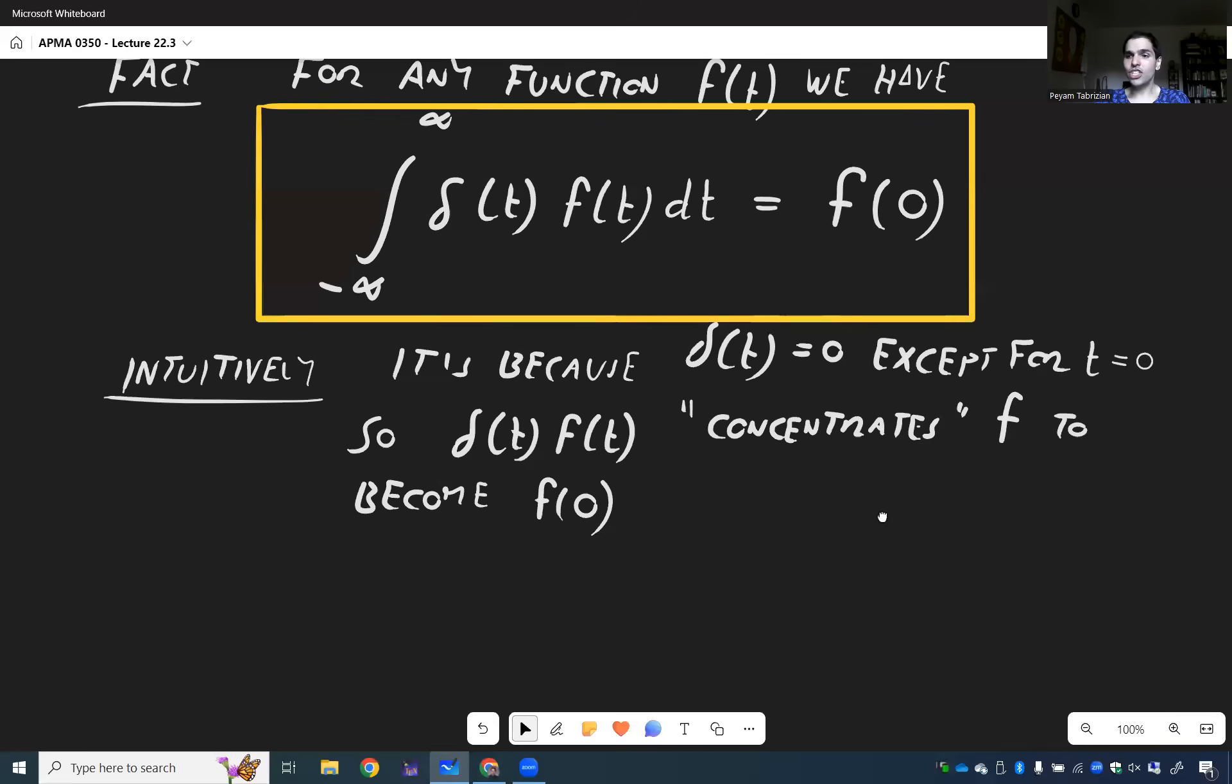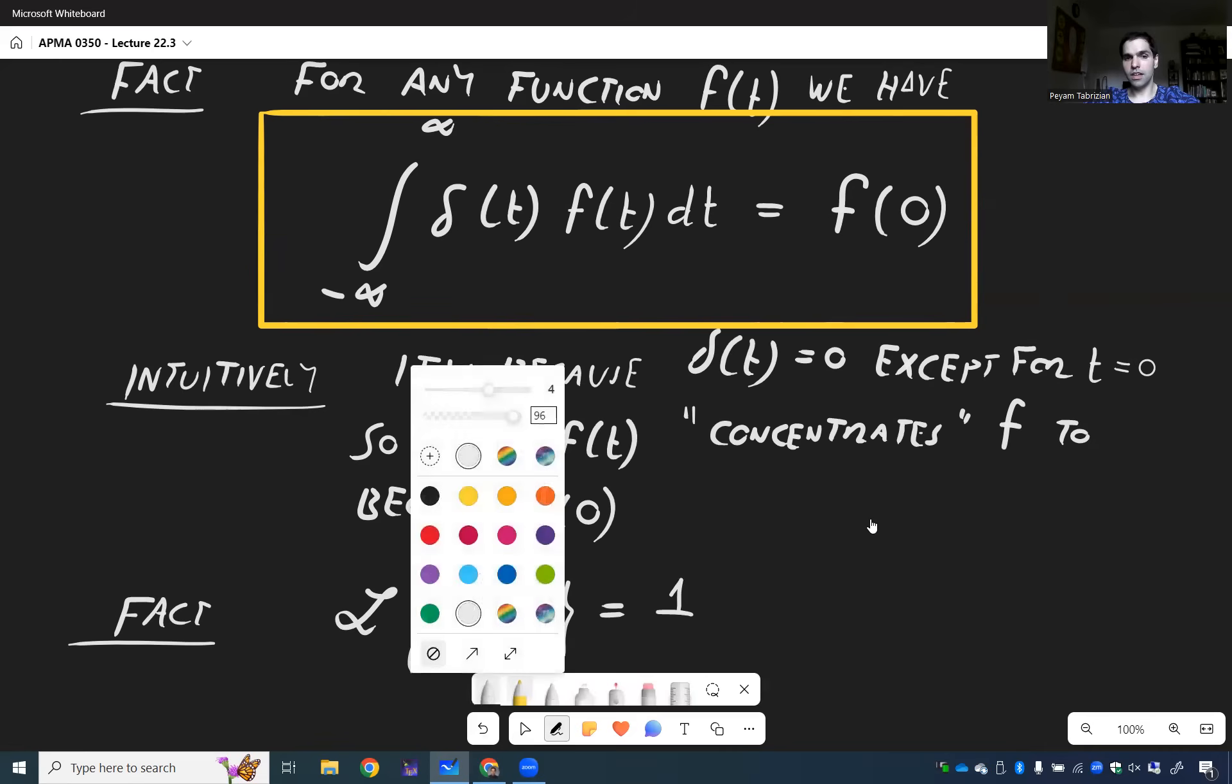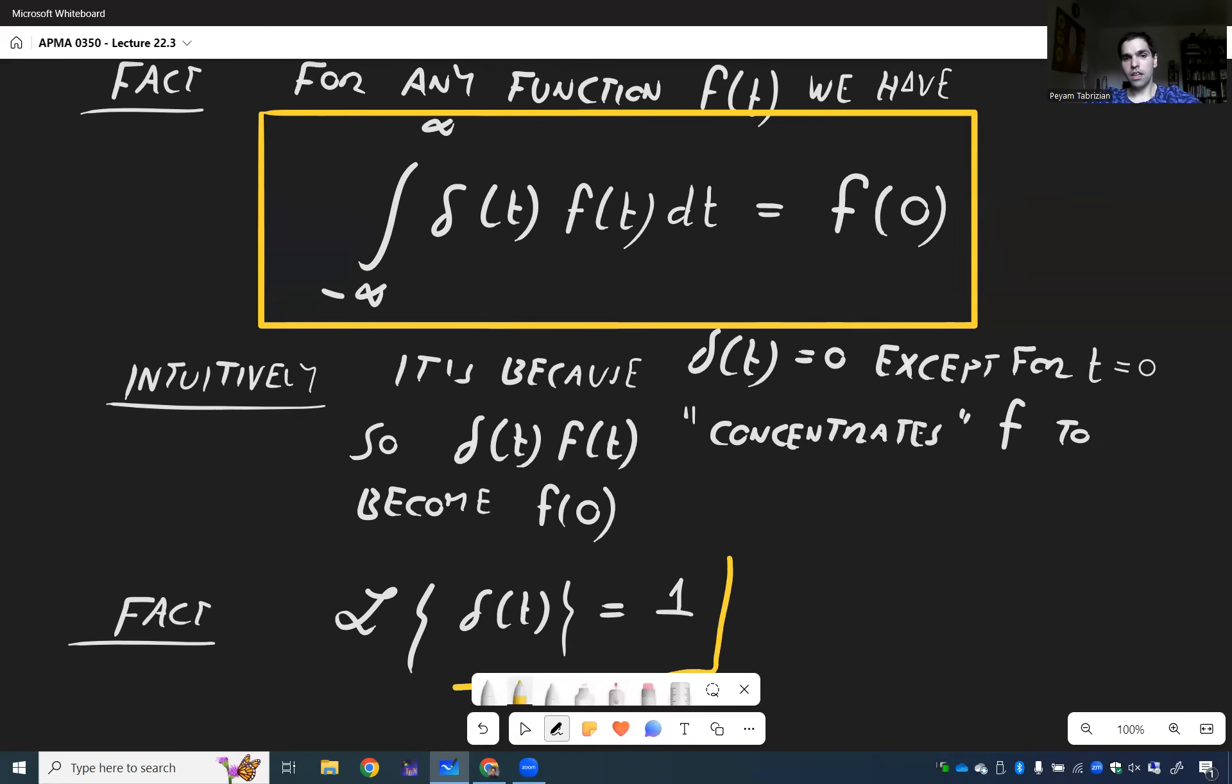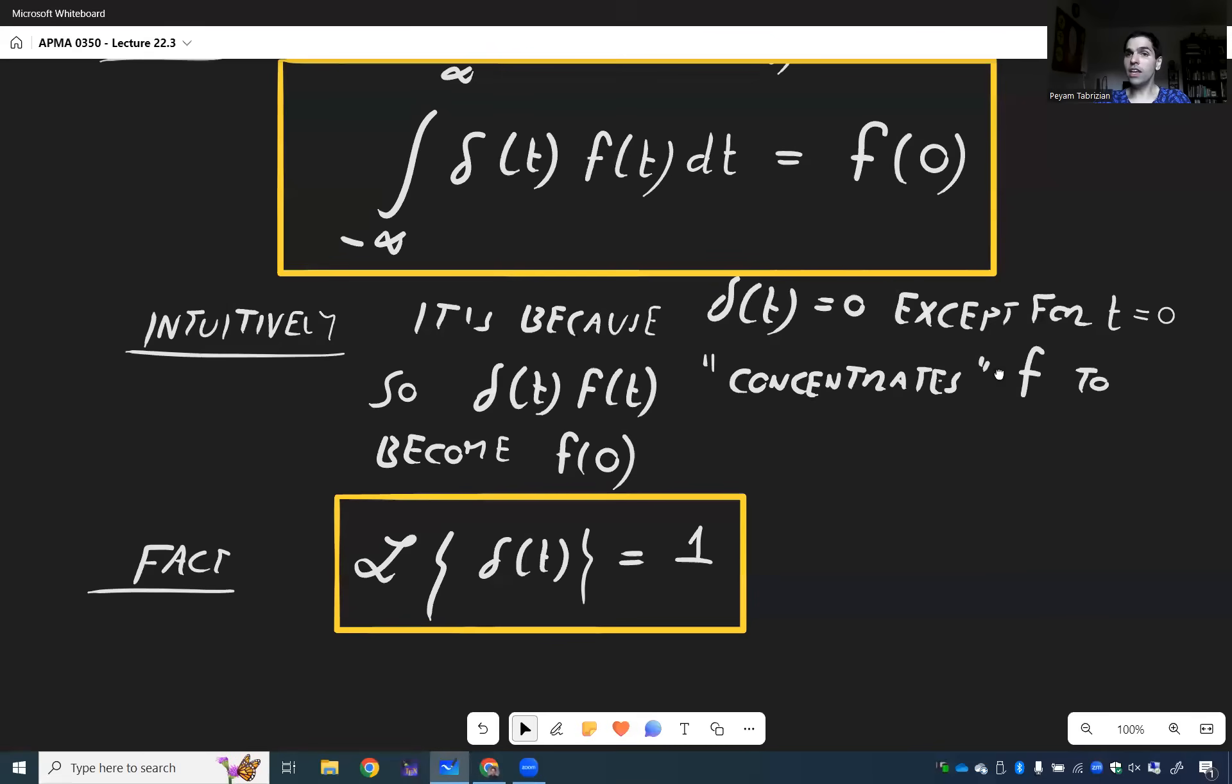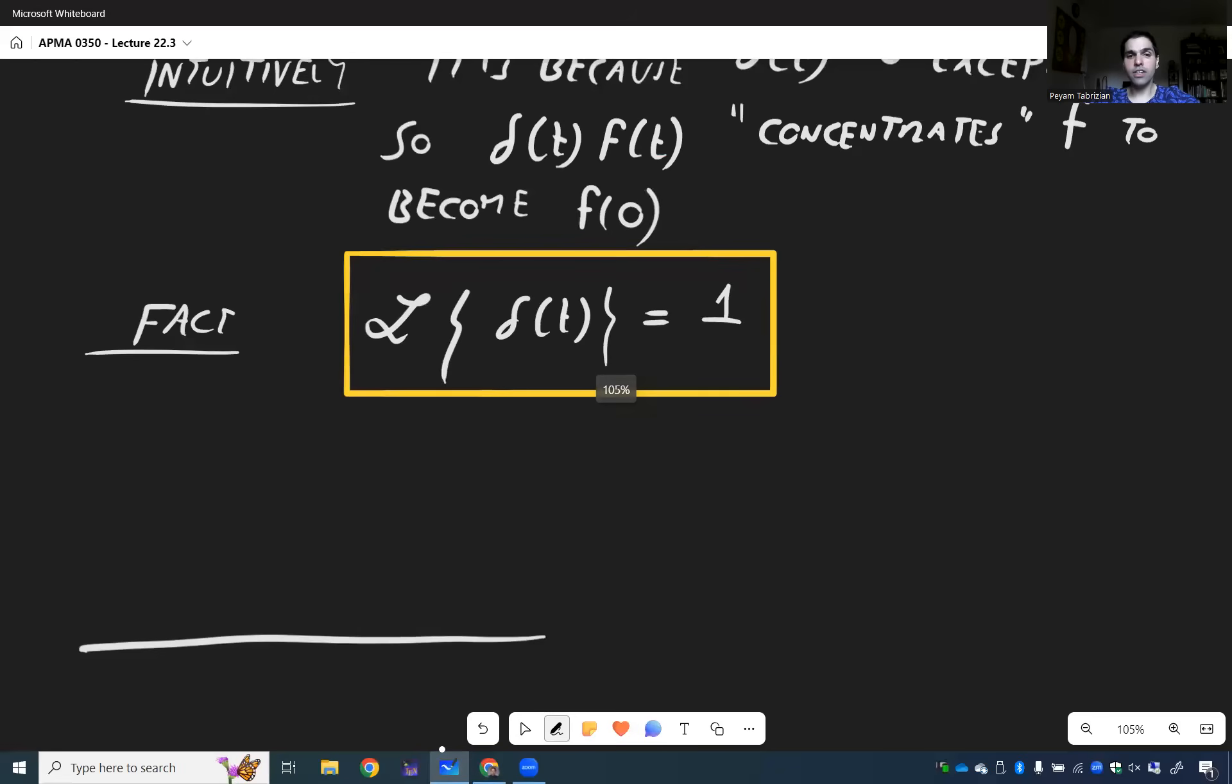now we can answer the question: what is the Laplace transform of Dirac delta? And the cool thing is, it turns out the Laplace transform of Dirac delta is just one, which is very surprising because we found before that the Laplace transform of one gives you one over s, but